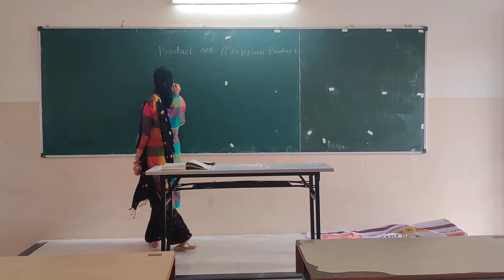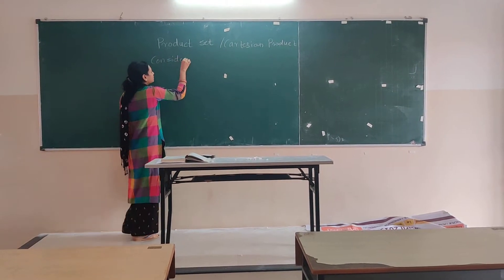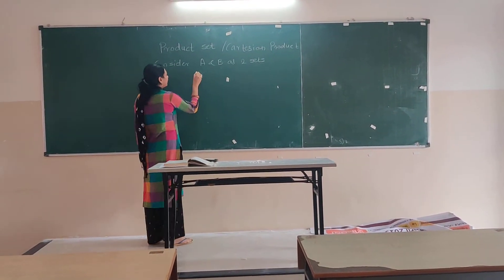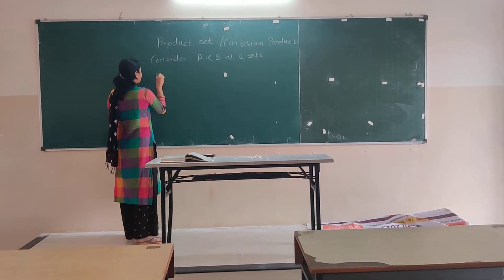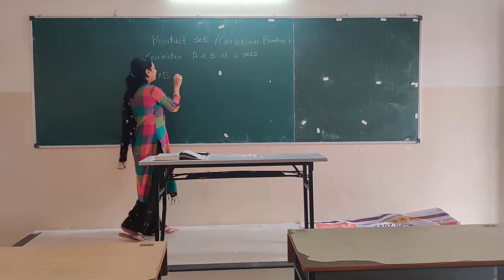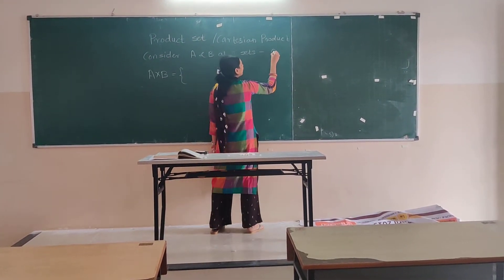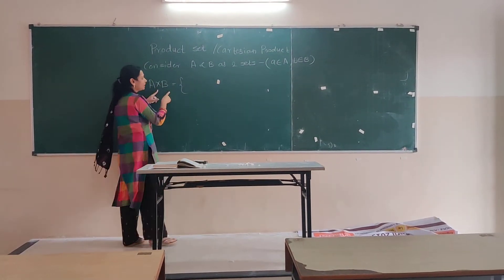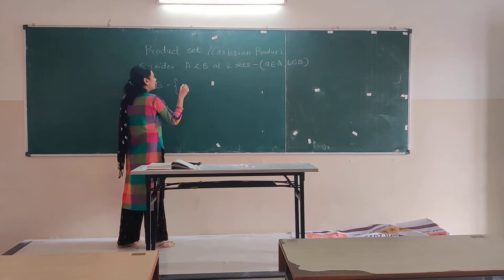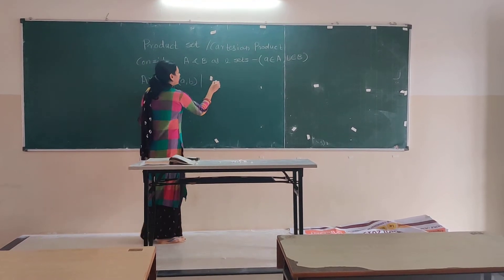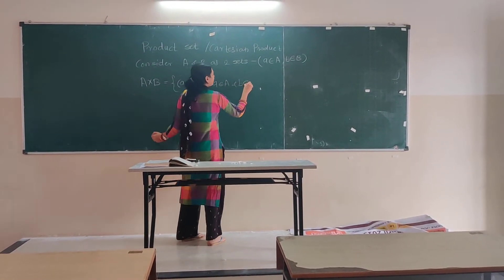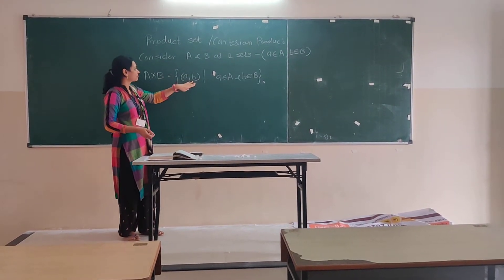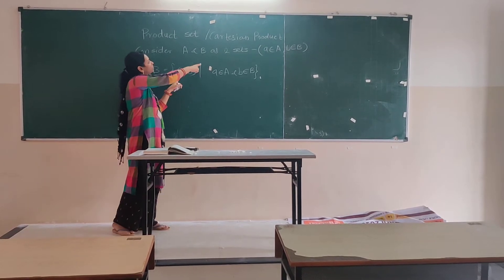Consider A and B as two sets. Then, the Cartesian product or product set is denoted by A into B. If a belongs to A and b belongs to B, then A into B — that is nothing but the product set or Cartesian product — contains the elements (a, b) such that a belongs to A and b belongs to B. So, we can say that the product set is responsible to provide the relation which is present between these two elements which belong to the different sets.